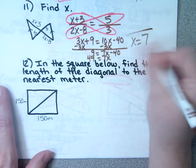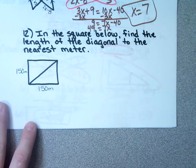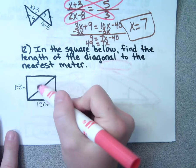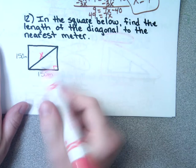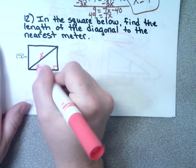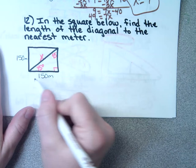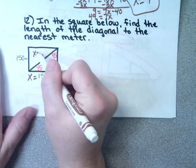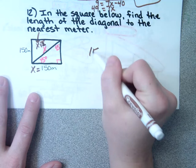Number 12: in the square below, find the length of the diagonal. A square has all sides equal and all 90-degree angles. The diagonal cuts each 90-degree angle in half, making 45s. So this is a 45-45-90 triangle. Across from the 45 I label X, and across from the 90 I label X√2. X is 150, so the diagonal is 150√2. It says nearest meter, so put 150√2 in the calculator. What do you get? 212.